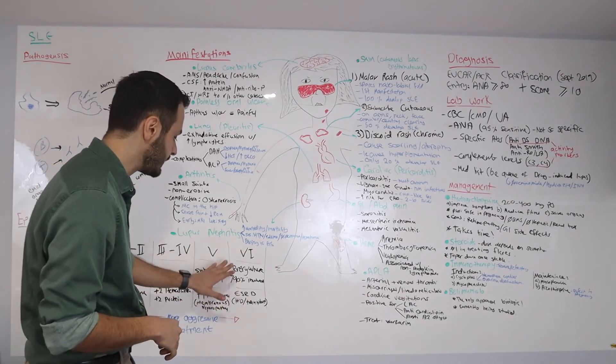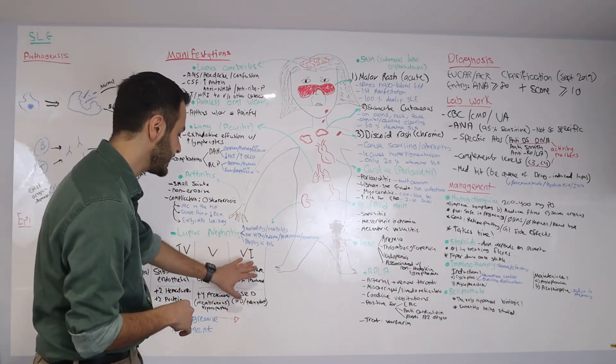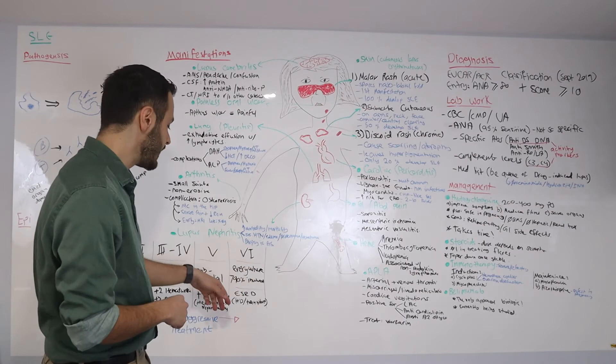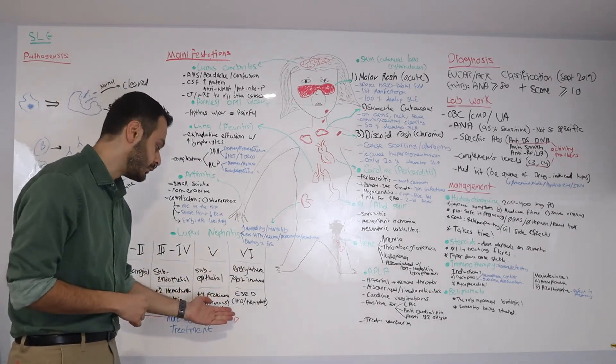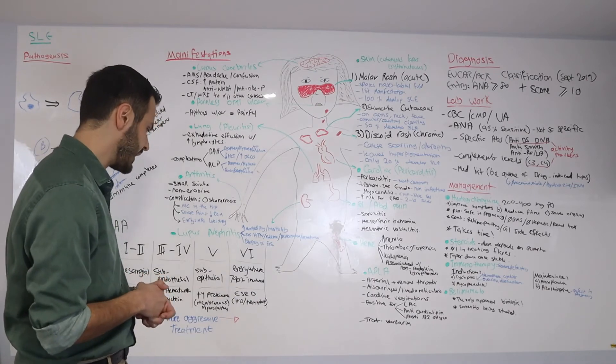Once they start depositing in more than 90% of the glomerulus, that's what we call class 6. This is end stage level, and in that case, your choices will be hemodialysis or kidney transplant.